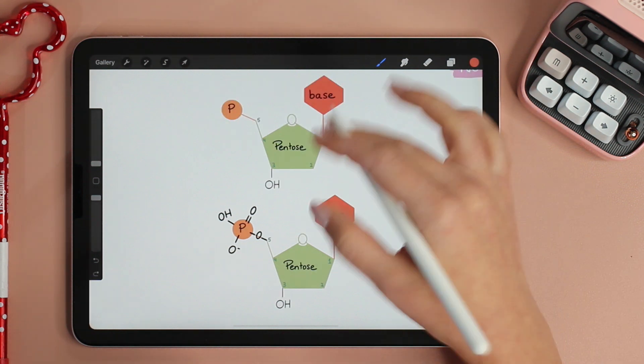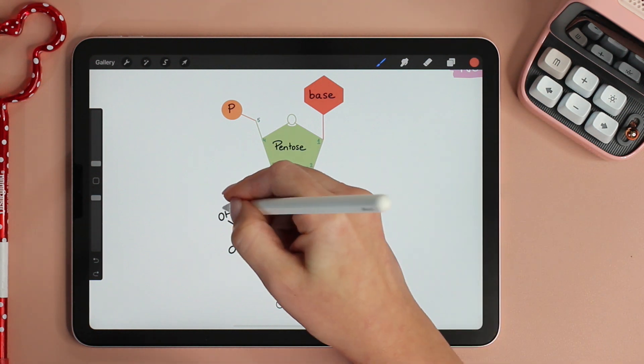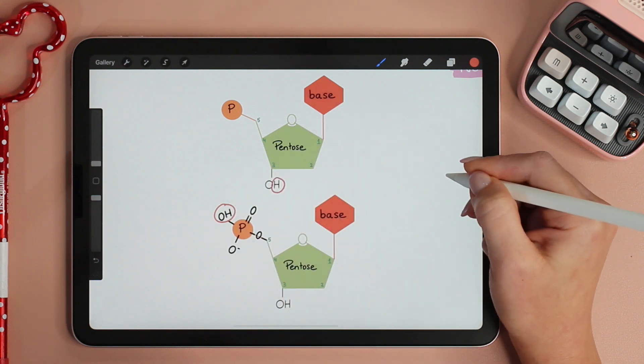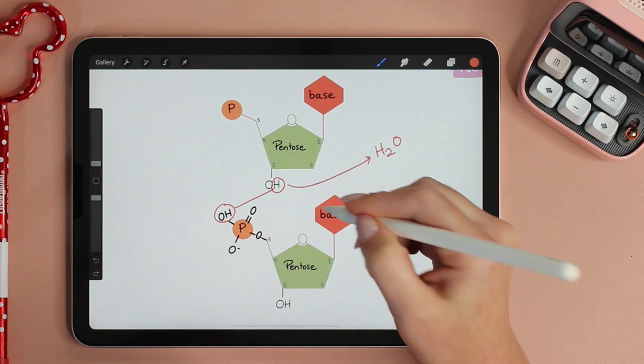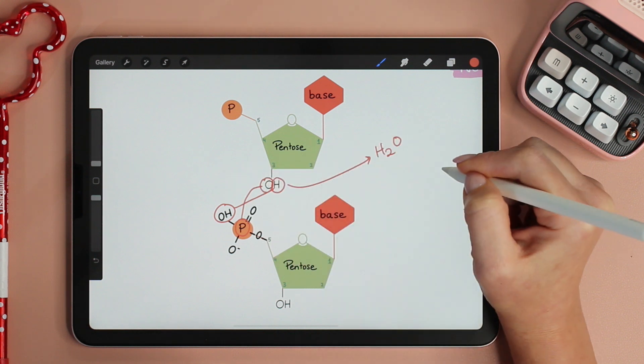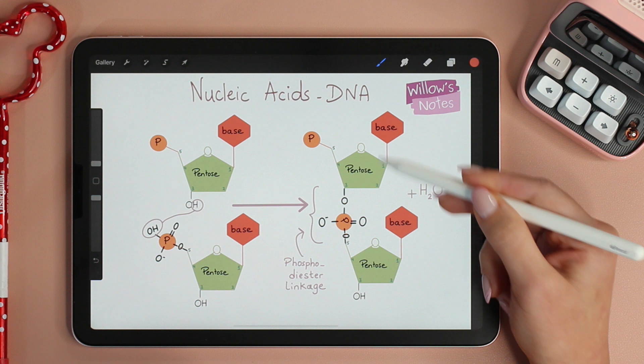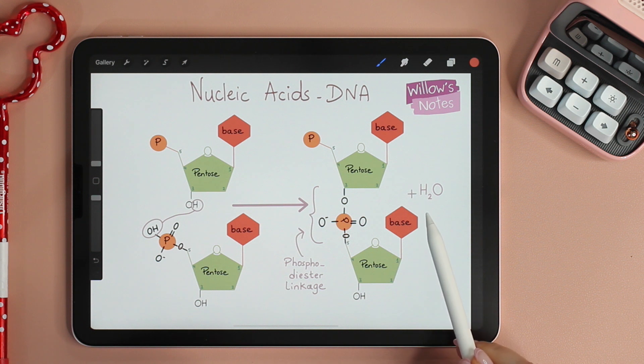Remember that a condensation reaction is a dehydration reaction. So the OH of the phosphate group and the hydrogen from the sugar will be lost as water. This will link the P of the phosphate group to the oxygen of the sugar. This is how the condensation reaction will look like. Notice that the link, the bond between the two nucleotides is known as phosphodiester linkage and water is released in the process.